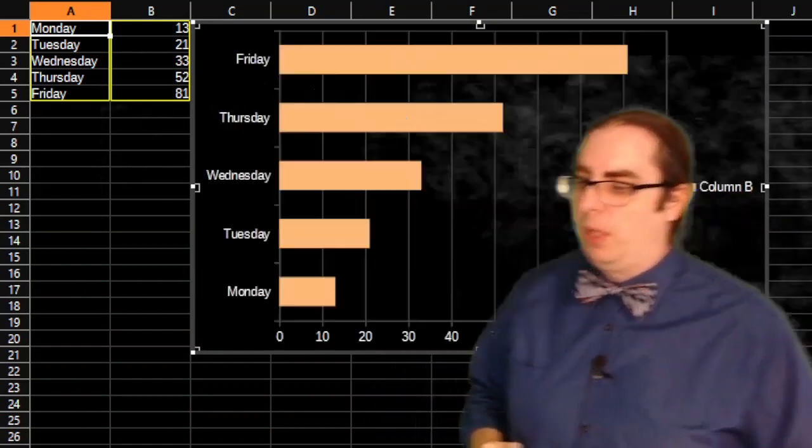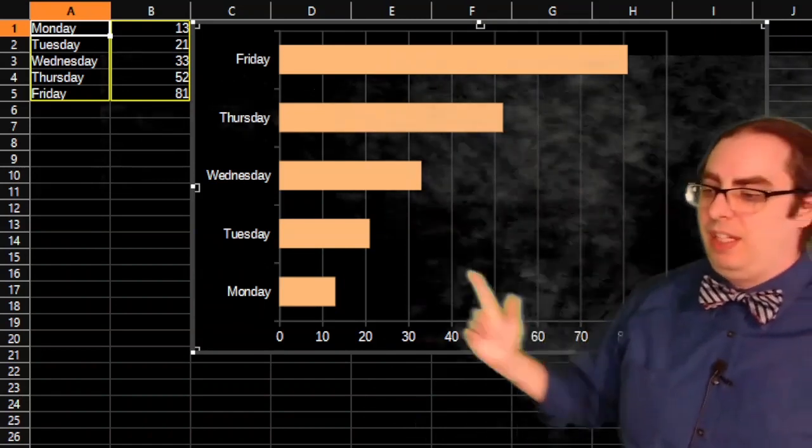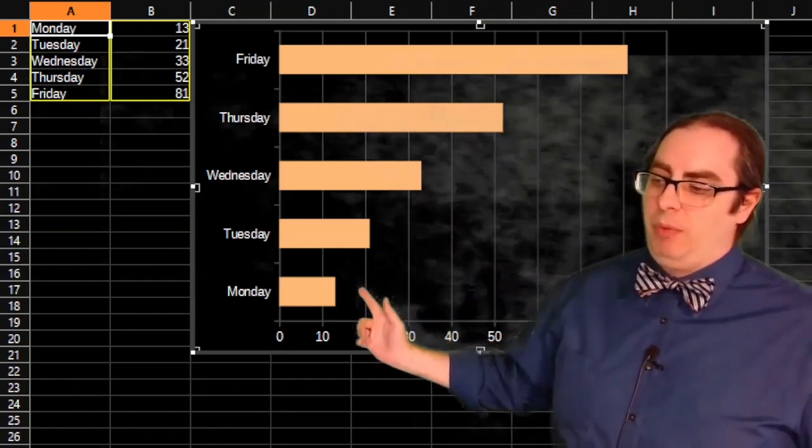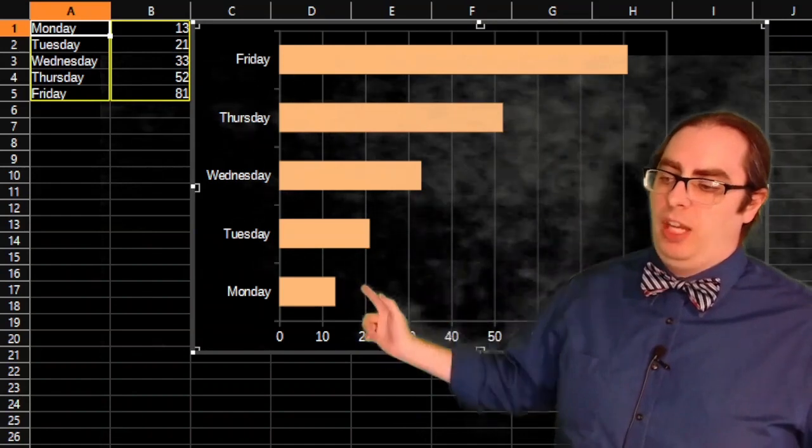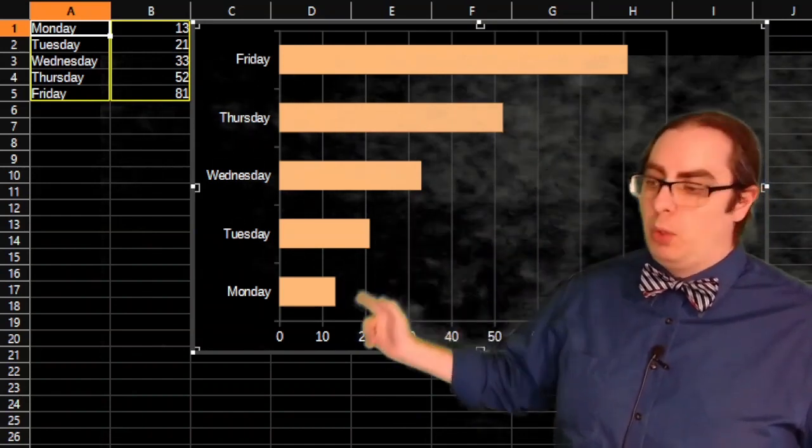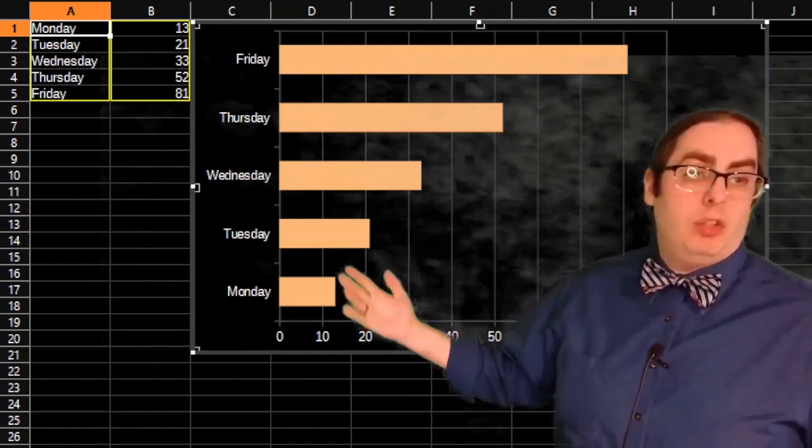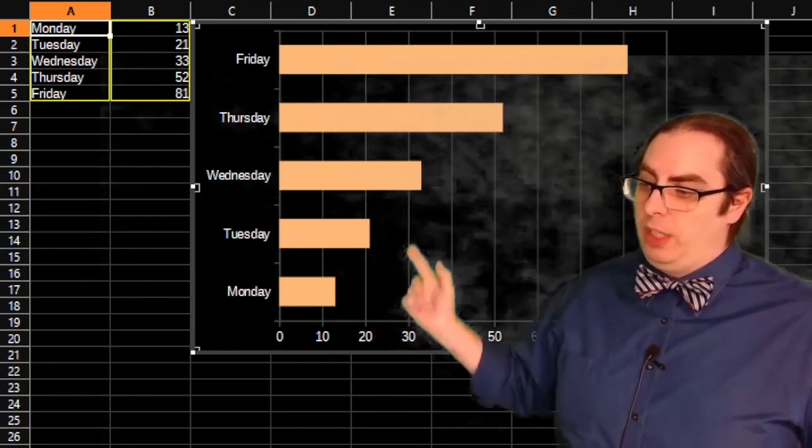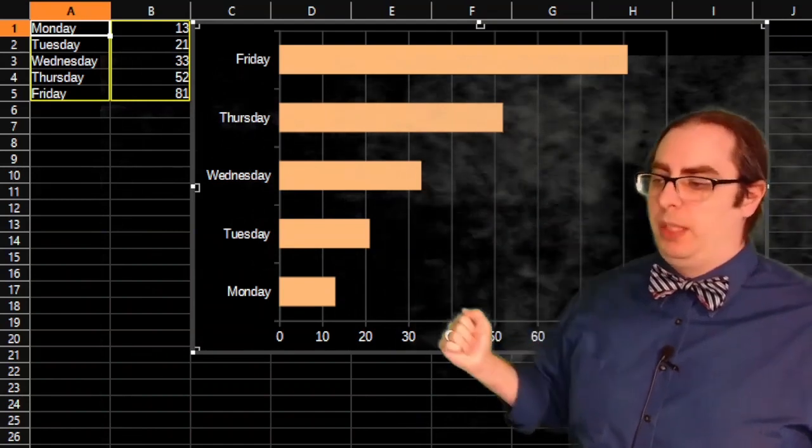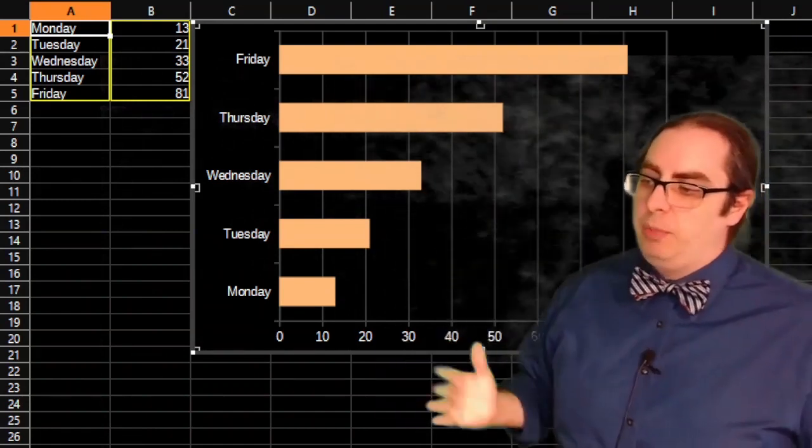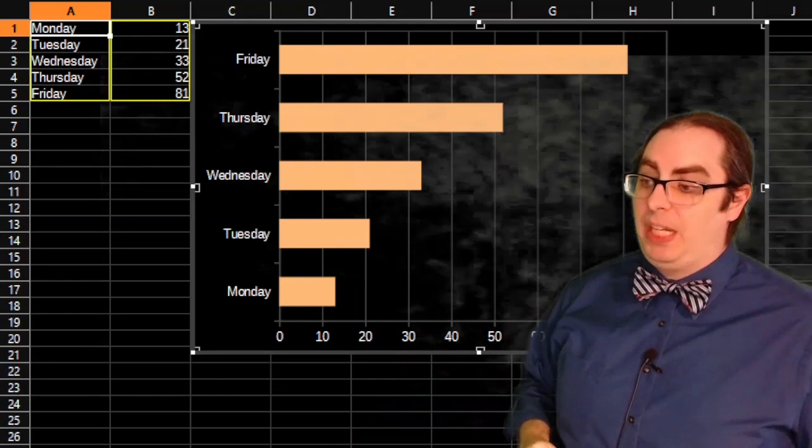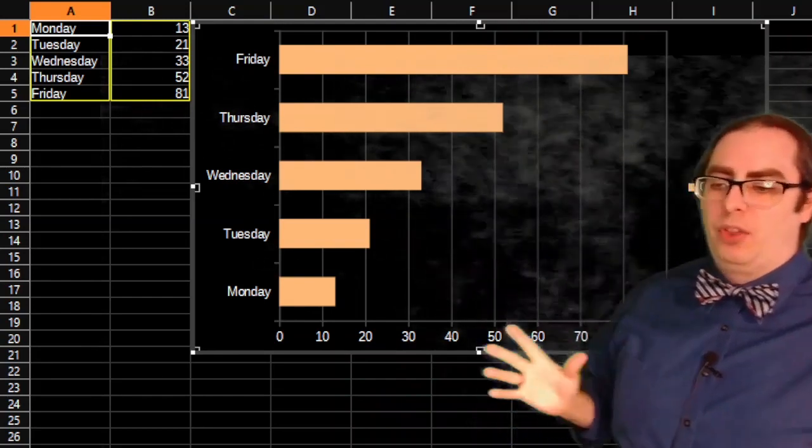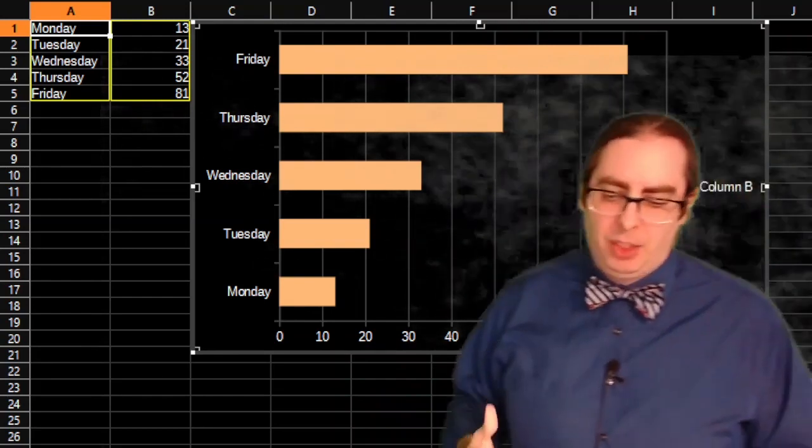Coming back to our bar graph again, the difference here, we can see if we want to compare Monday and Tuesday. Certainly Tuesday is more than Monday, but it's not twice as much as Monday. We can get a good sense that Wednesday is about twice as much as Monday just by looking at the pictures. Those are things that bar graphs will highlight that a pie chart cannot.